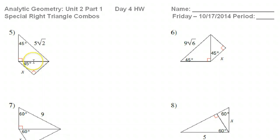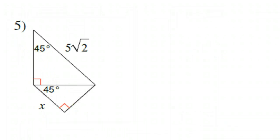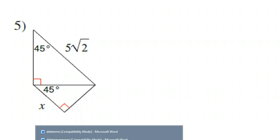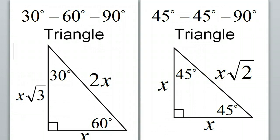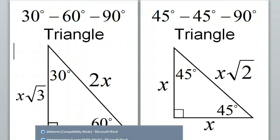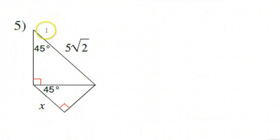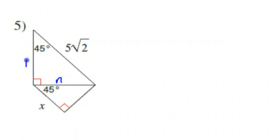We're on problem number five. The pattern for a 45-45-90 triangle goes like this: X, X, X radical two. These Xs are the legs, and the hypotenuse is leg times radical two. I'm not going to use X because X down here is something else, so I'm going to use N. So this would be N, N, and this should be N radical two.